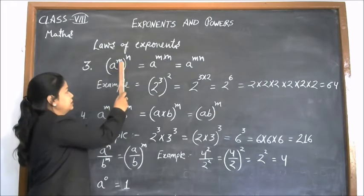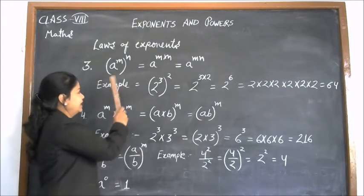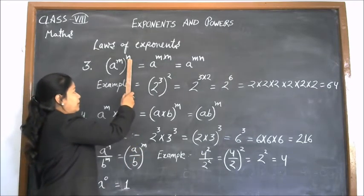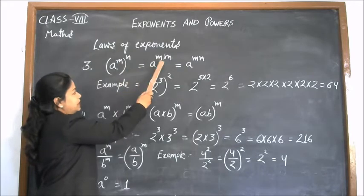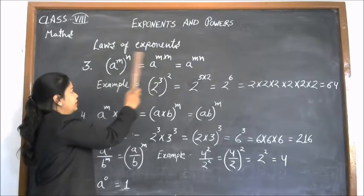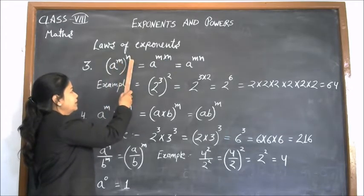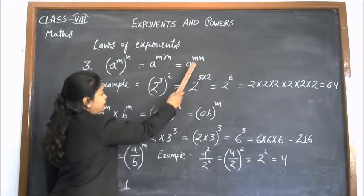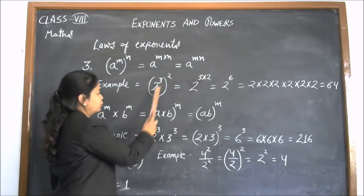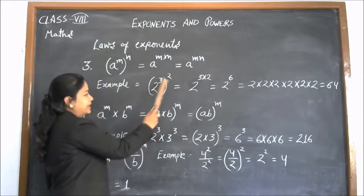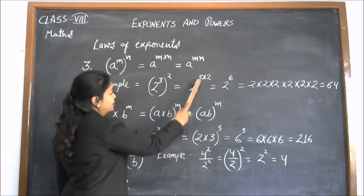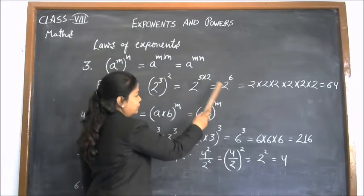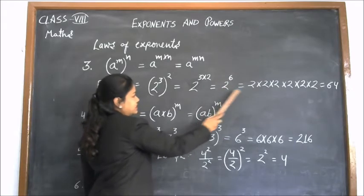If we have a single base and two powers — that is, a power on a power — then the powers will be multiplied with each other. So a to the power m, whole to the power n, equals a to the power m into n. For example, 2 to the power 3 whole to the power 2: the two powers will be multiplied, giving 2 to the power 6. And 2 to the power 6 is 64.